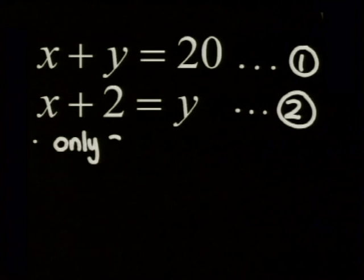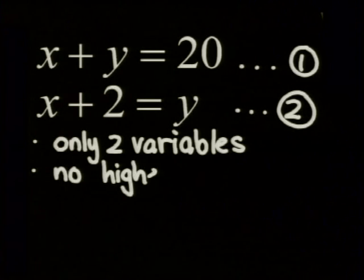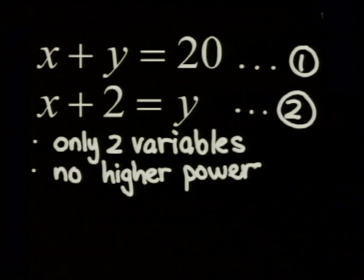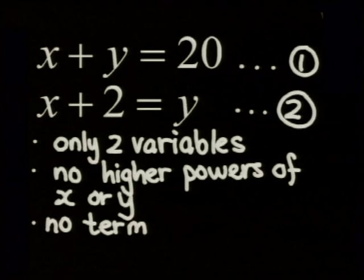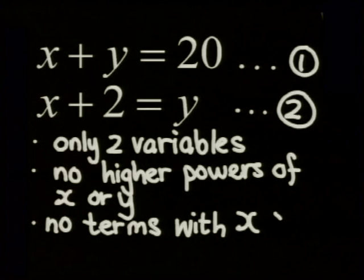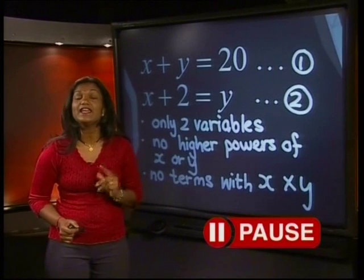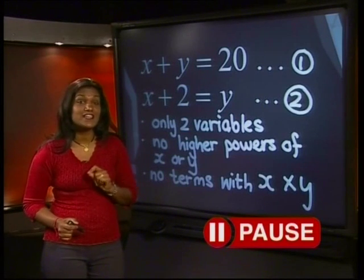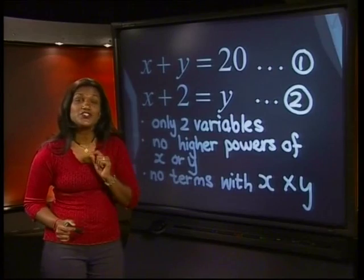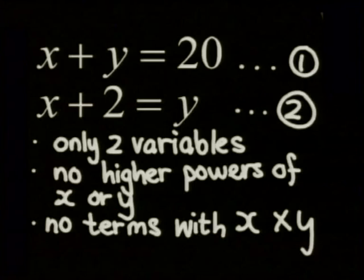In each equation there are two variables, namely X and Y. There are no terms involving X squared or Y squared or any other higher powers of these unknowns. The unknowns are only raised to the power of 1. Also, there are no terms with X times Y. So what type of equations do we have? We are working with linear equations. And if we are going to solve this example using graphs, what type of graphs do we expect? The graphs of linear equations are straight lines.